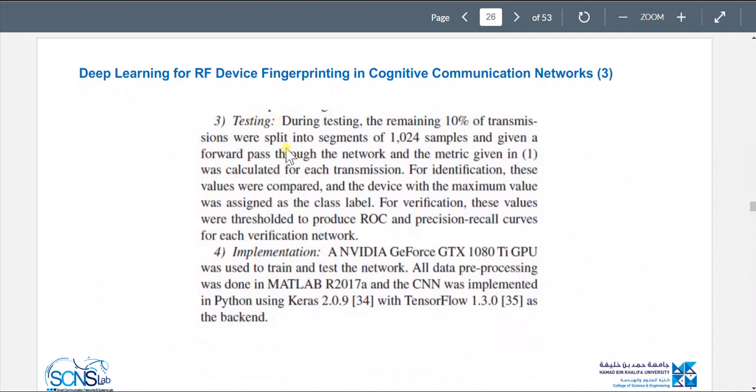So we have testing and implementation. For testing, the remaining 10% of transmissions were split into segments of 1024 samples and given a forward pass through the network. And the metric given was calculated for each transmission. For identification, these values were compared and the device with the maximum value was assigned as the class label. To verify, these values were thresholded to produce ROC curve and precision recall curves for each verification network.